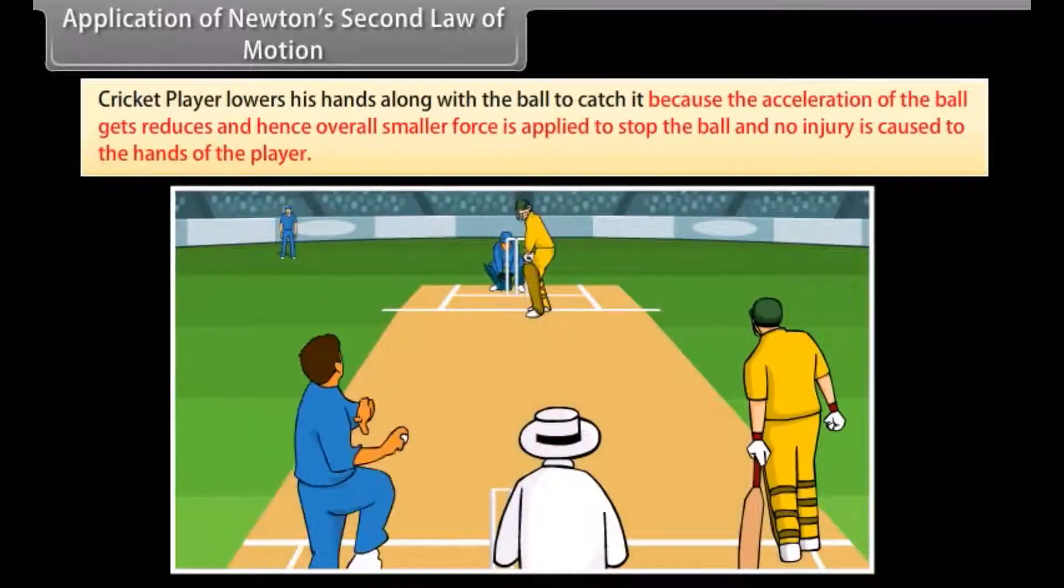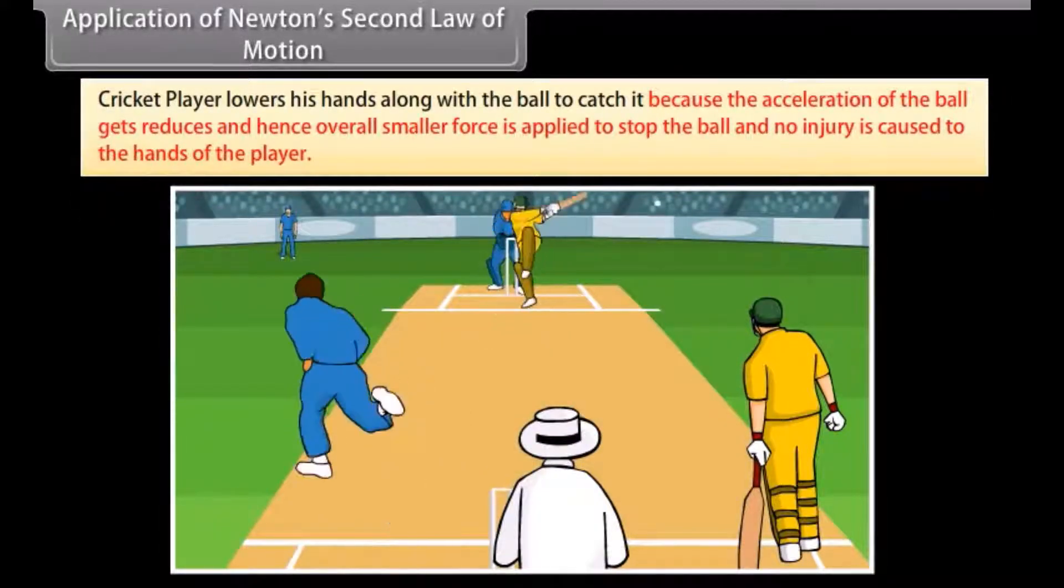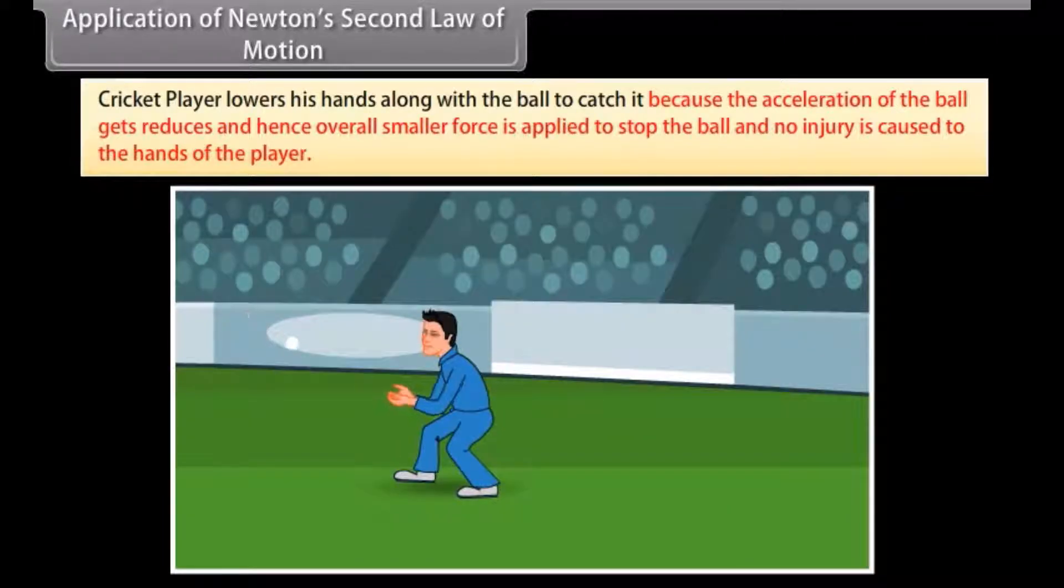Cricket player lowers his hands along with the ball to catch it because the acceleration of the ball gets reduced and hence overall smaller force is applied to stop the ball and no injuries caused to the hands of the player.